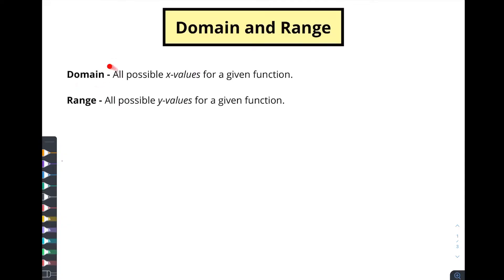Let's get to it. Domain is really all possible x values for a given function. The range is really all possible y values for a function. It's just what are the x's and what are the y's for a given function.